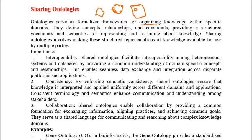Ontology defines the concepts, relationships, and constraints within a domain. For example, if the domain is diamond, the concepts involved can be its shape, jewelry, or playing cards. These are different concepts for a single domain called diamond.